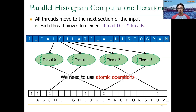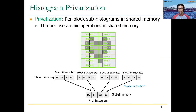The problem with atomic operations is that they serialize execution, which can really affect performance. There are techniques to alleviate this bottleneck — for example, privatization. In privatization, we replicate the histogram, creating multiple sub-histograms, each assigned to a different thread block. Once the sub-histograms are computed, we reduce them in parallel to obtain the final histogram residing in global memory.